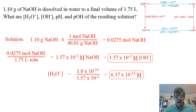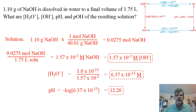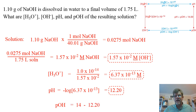We've done our heavy lifting. Now let's find the pH and pOH. The pH is the negative log of the hydronium ion concentration we just calculated. Punching that into our calculator, the pH comes out to 12.20. Finally, to calculate the pOH, we subtract 12.20 from 14 — because pH plus pOH equals 14 — and it comes out to 1.80.